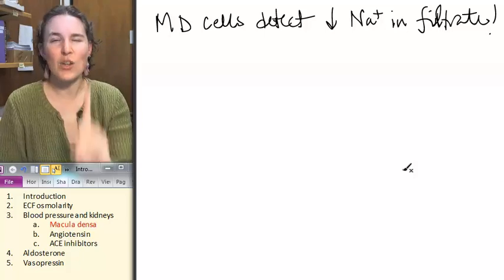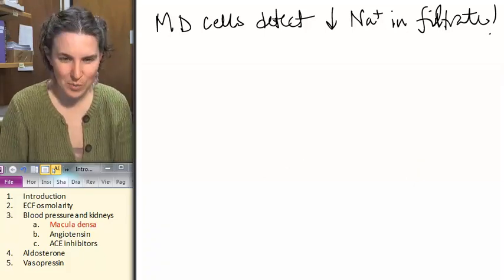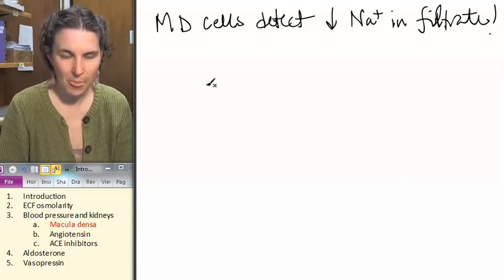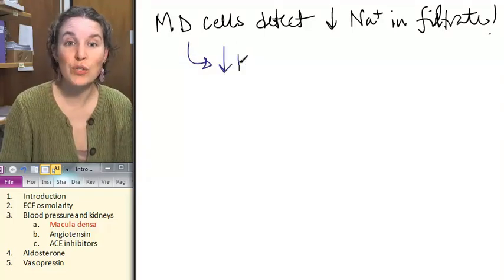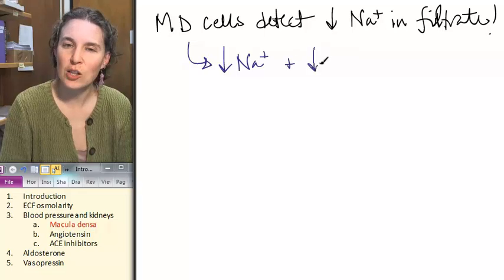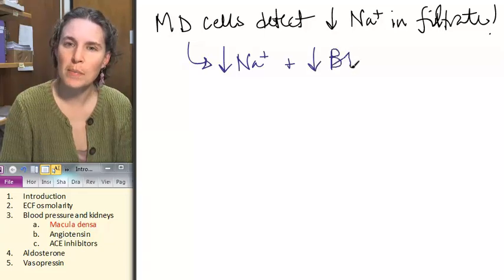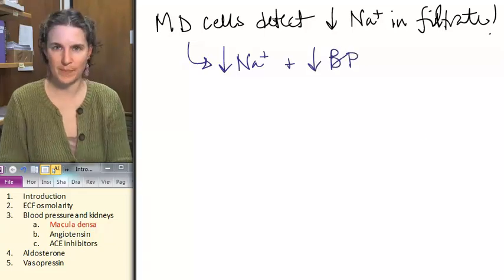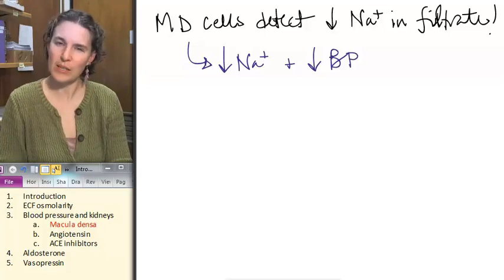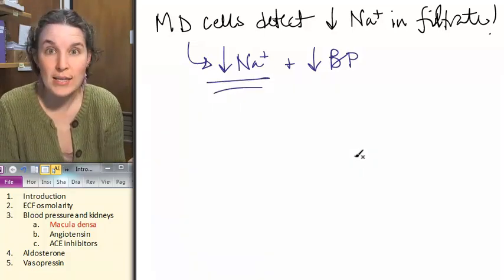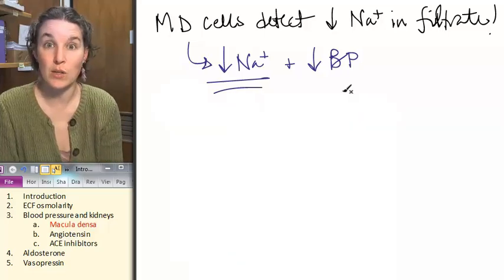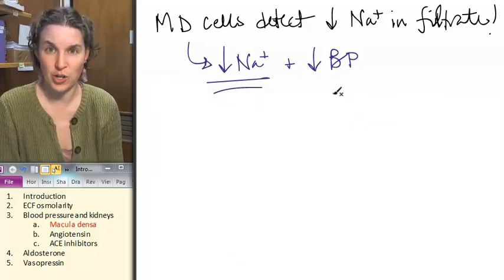What happens is macula densa cells detect low sodium in the filtrate. And they associate, this is the part that's a little bit of a stretch. They associate low sodium and low blood pressure. Now, let me tell you how they do that. Why is it that they think that low sodium is associated with low blood pressure?